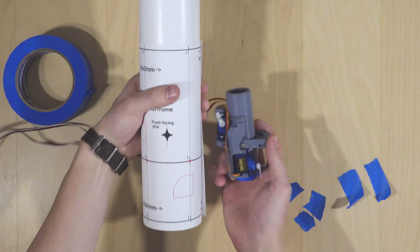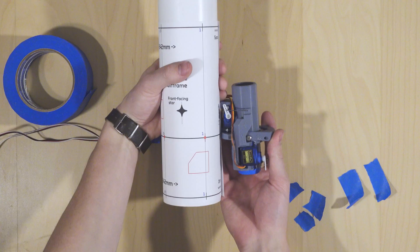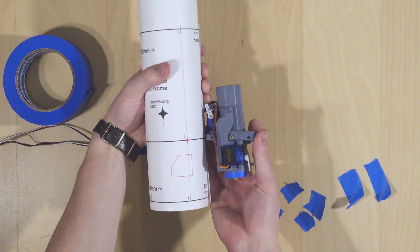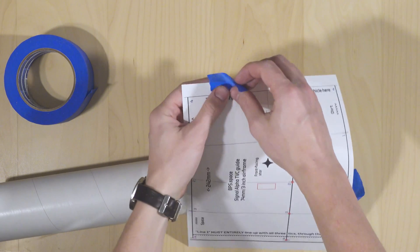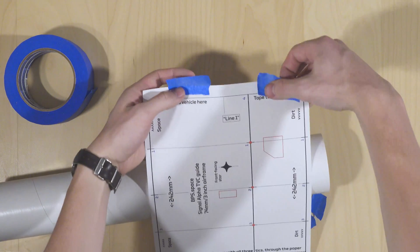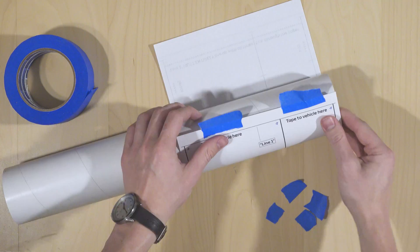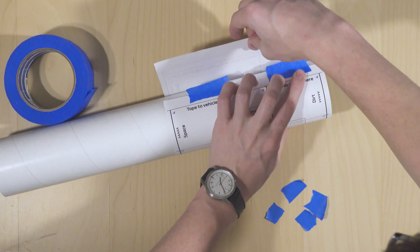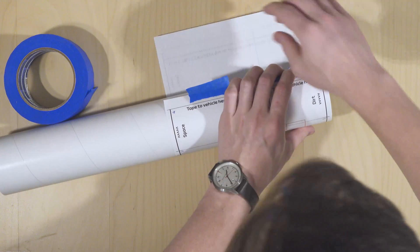It's also a good idea to grab your TVC mount here and line it up with the red dots around the airframe. This is where it's going to be mounted on the rocket. This should give you a good sense of where your motor will sit once it's in the rocket. Place two pieces of tape where it says tape to vehicle here, and then we will do just that. This paper doesn't have to be lined up with the bottom of the vehicle, but I find it's a helpful place to start when building your first vector thrust rocket.